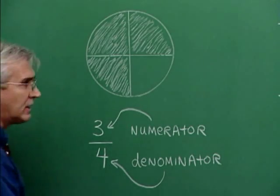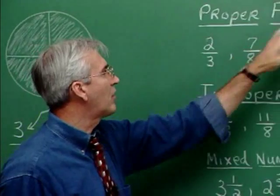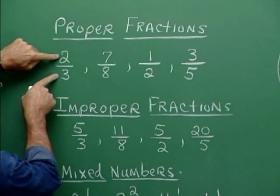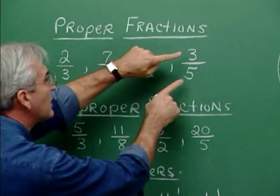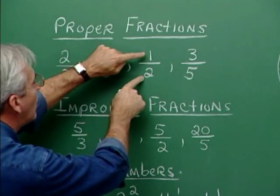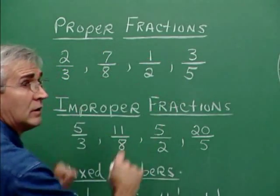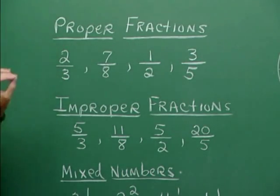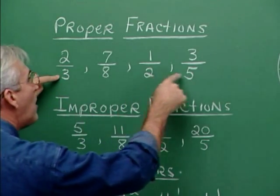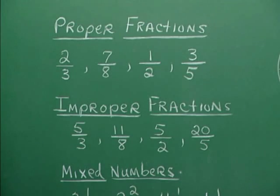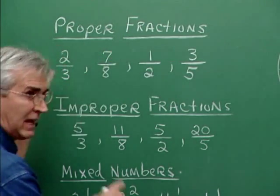Fractions actually come in several forms. These are examples of proper fractions. The prevailing characteristic of proper fractions is that the numerator is smaller than the denominator in every case. All of these describe a piece of a whole — truly a part of a whole — because the bottom number describes how many are in a whole, and the numerator is smaller than that.